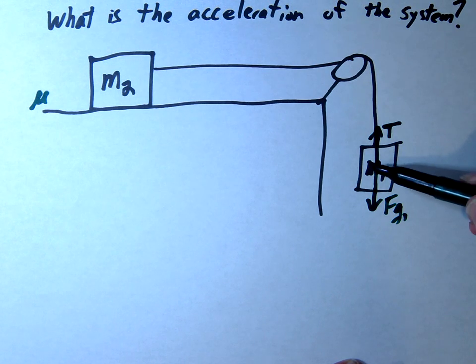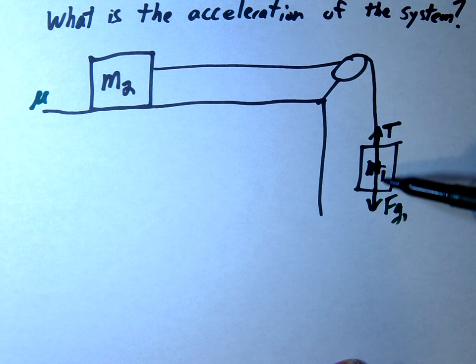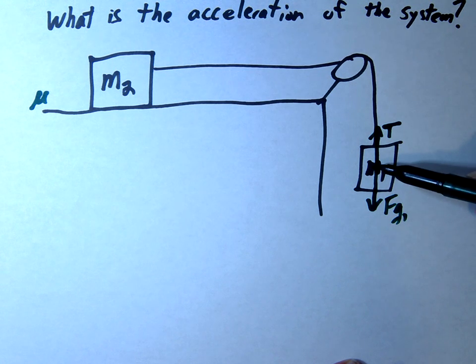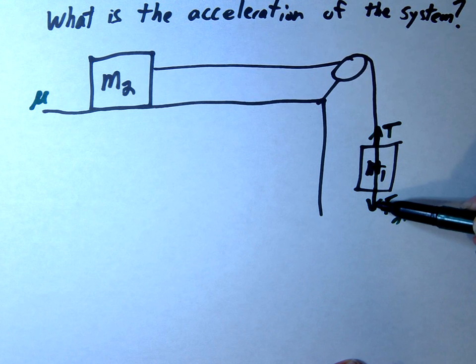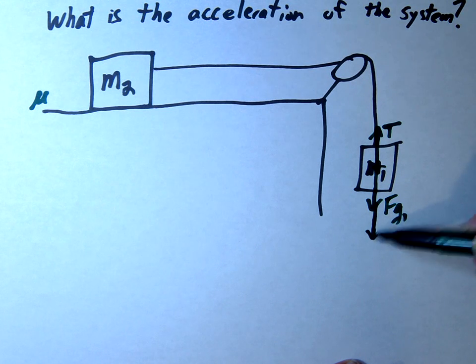One thing to think about is the relative magnitudes of these forces. Since this mass is going to move down, we should make the gravity vector slightly larger than the tension vector.